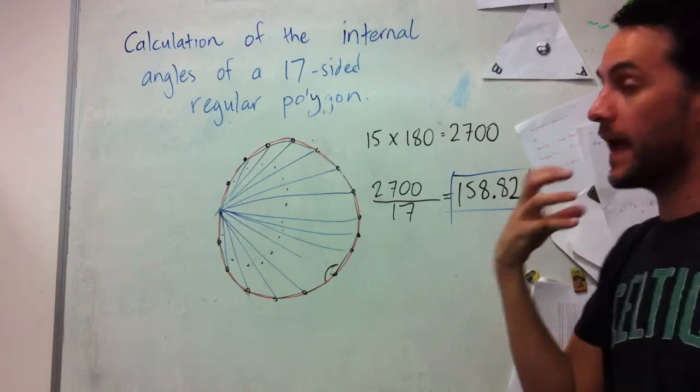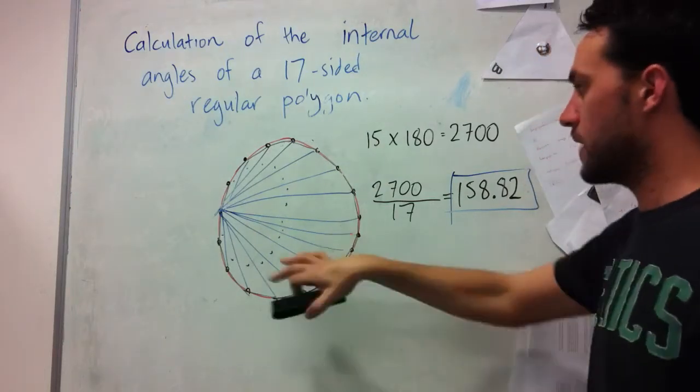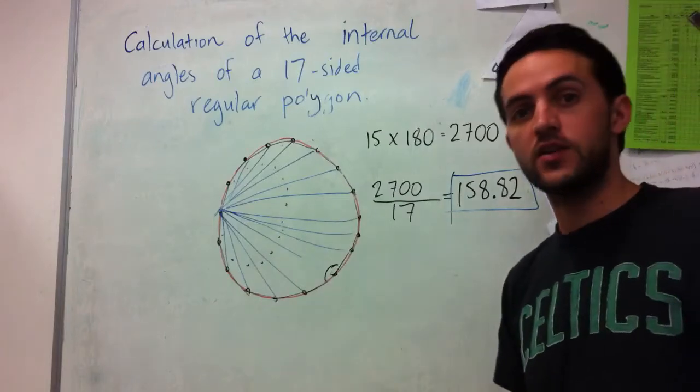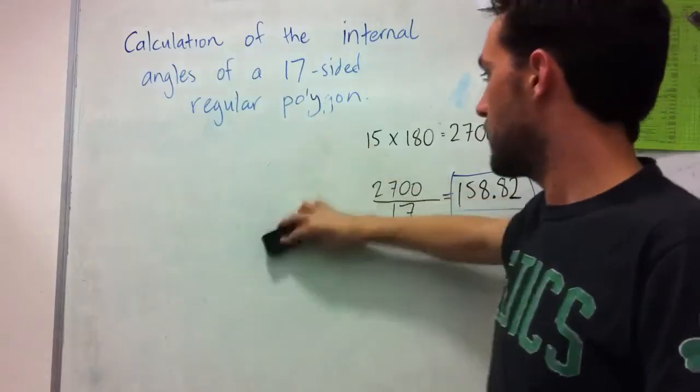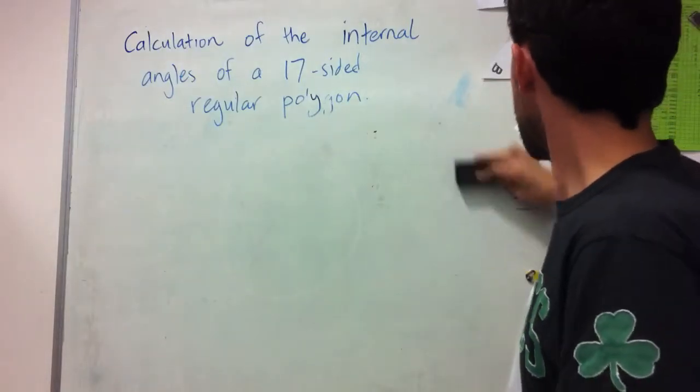Now, one extra thing that I'll just add is, at the moment we take it for granted that triangles have 180 degrees as their internal angles. We can actually prove that.